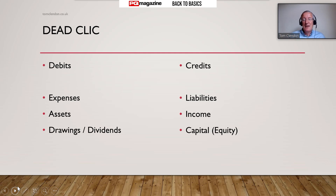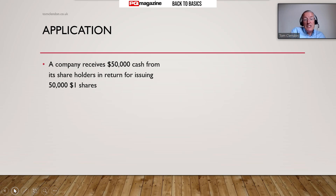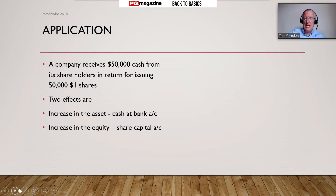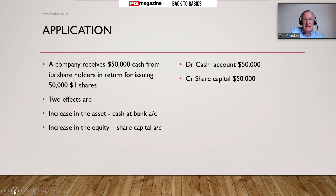The real way to remember is to apply the rules, and I've got three examples of practical applications. The first: a company receives £50,000 cash because the owners - the shareholders - have put money in, so the company is issuing shares. From the perspective of the company there are two effects: the company is receiving more money - more assets in its bank account - but it's got a bigger ownership interest, a bigger equity. Both the asset and the equity are going up. Assets go up: it's a debit. Equity goes up: it's the credit.